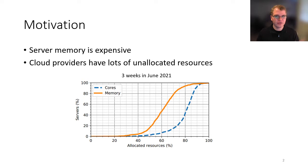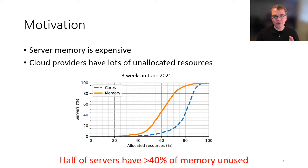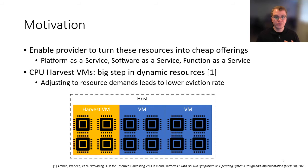Server memory today is very expensive, making up nearly half of the cost of running servers in today's data centers. Cloud providers have a lot of this memory resource just going unallocated in their systems. To confirm this, we took resource metrics across all the servers in Azure for several weeks and found that at least half of the servers there have roughly 40% of their memory or more just going unused at any one time.